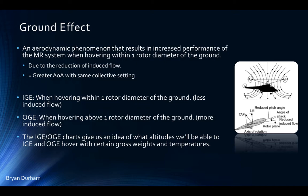Ground effect is an aerodynamic phenomenon which gives you increased performance when hovering within one rotor diameter of the ground. The reason for increased performance is a reduction of induced flow. They should remember from their aerodynamics lesson that there are two components of relative wind: induced flow and rotational relative wind. Anytime induced flow increases, angle of attack drops, decreasing overall performance — and vice versa. IGE means hovering within one rotor diameter; OGE means you're high enough that you no longer get the benefit of reduced induced flow.